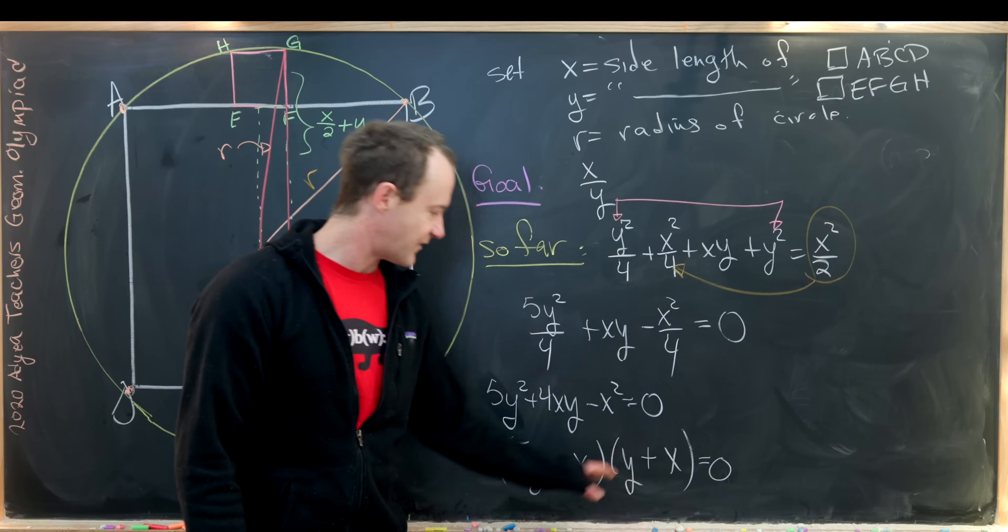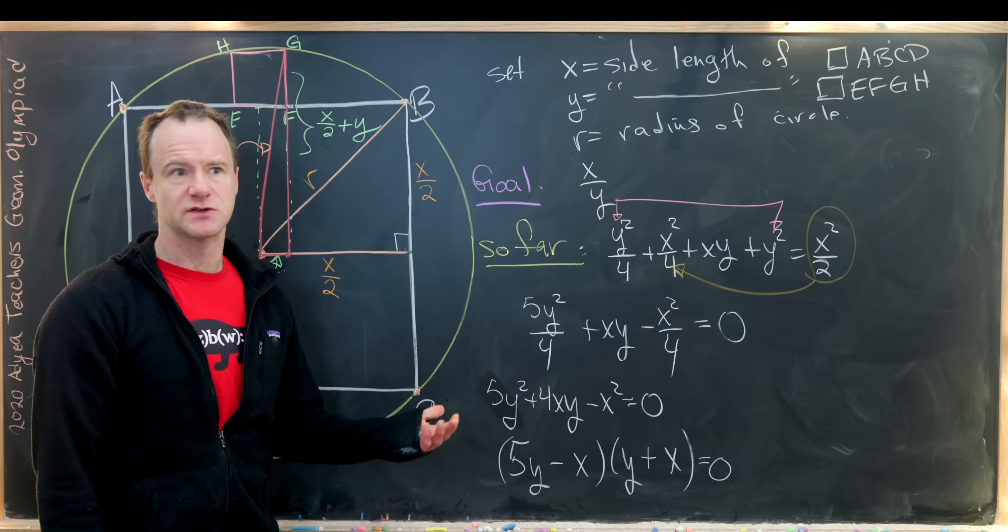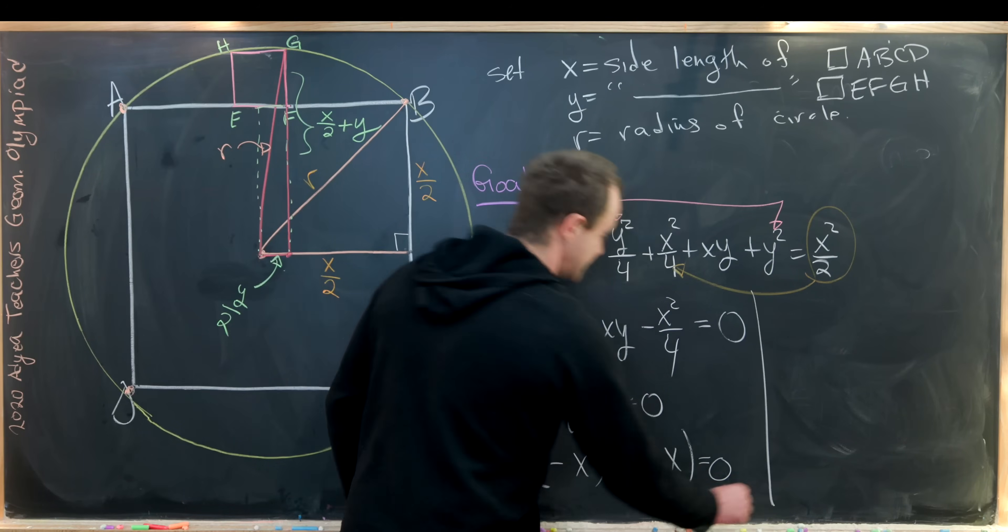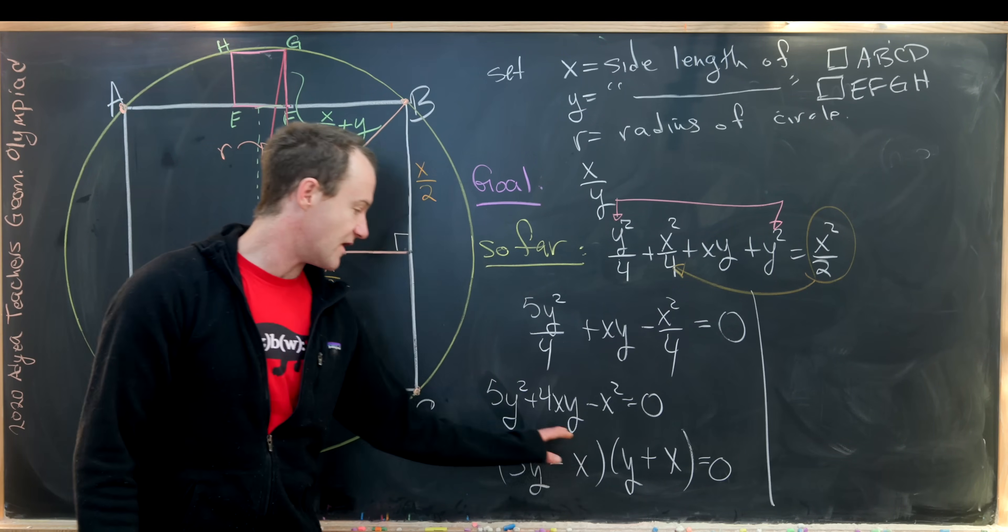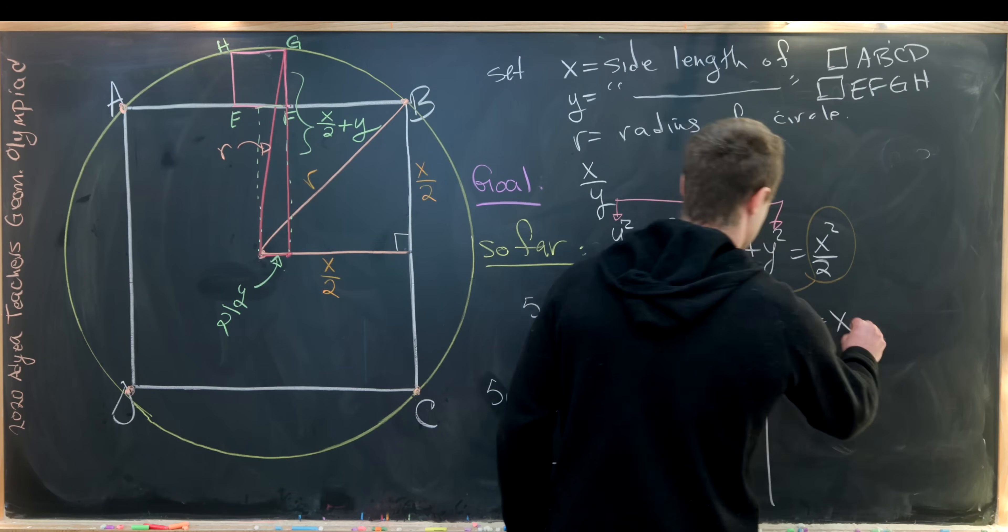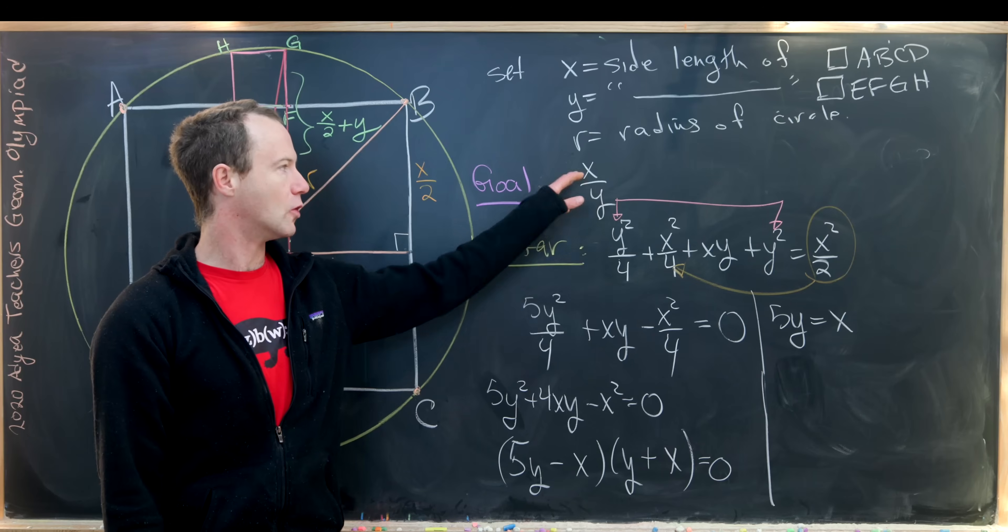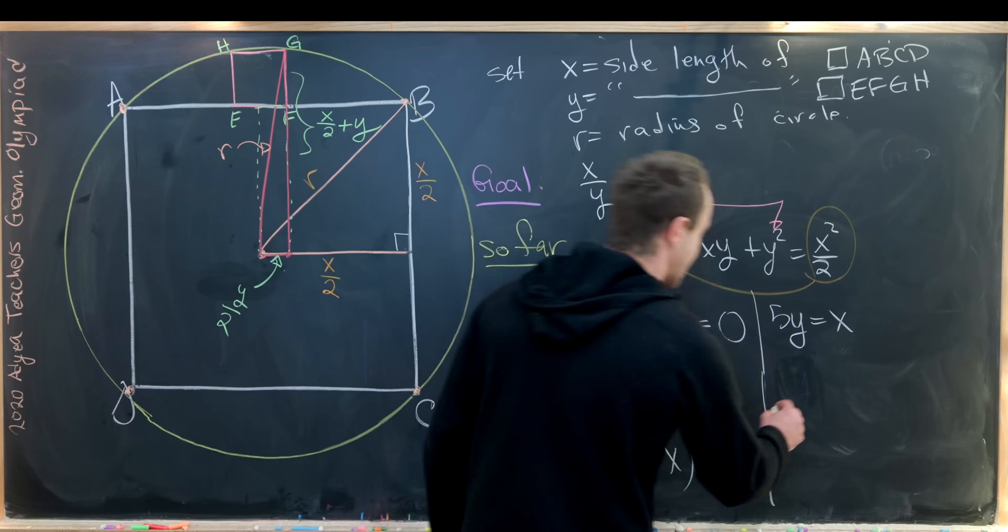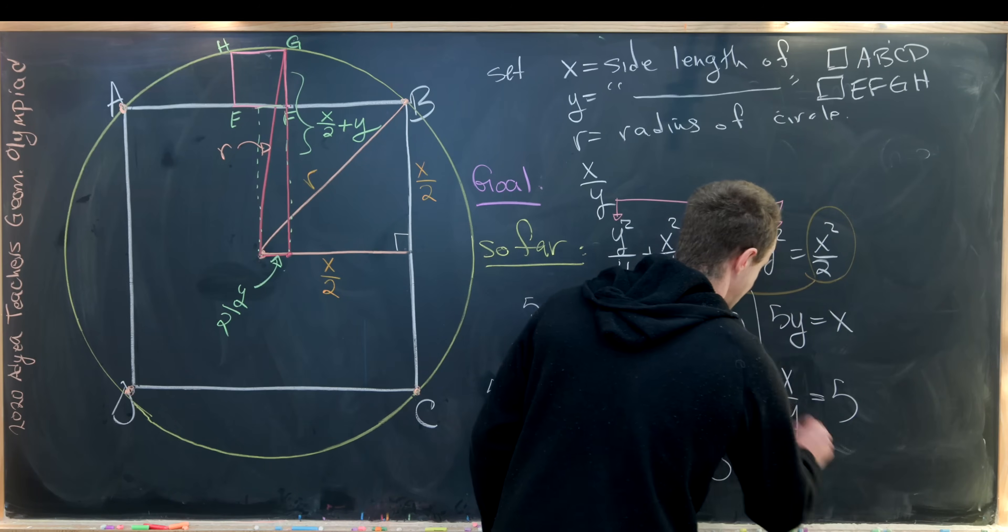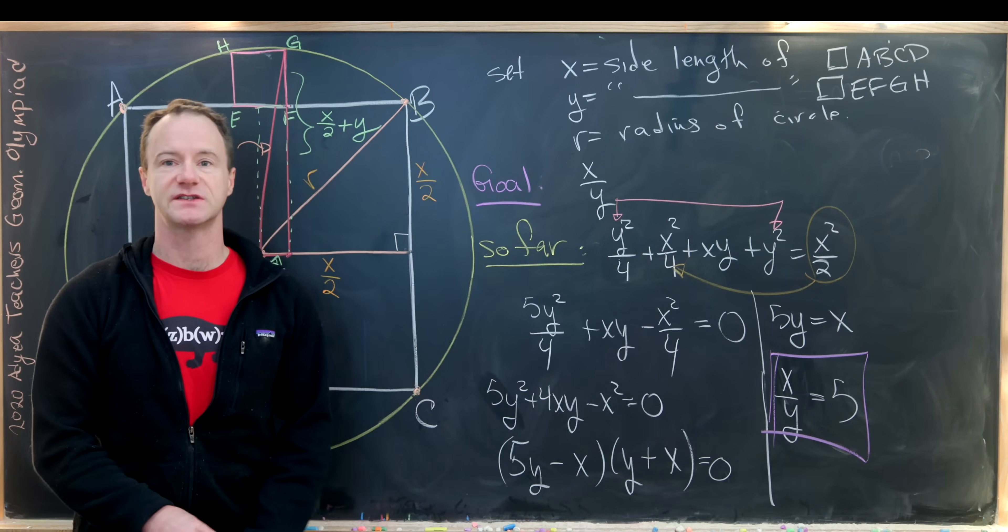So let's notice that this factor will give us the X and Y are opposites. So one is negative, but that doesn't make any sense in our situation. So we are only given a solution via this factor. So in other words, we know 5Y equals X, but that can be easily rearranged to find our goal, which is this ratio of side lengths. And we'll see that X over Y is equal to 5. And that was the final goal of this whole problem. And that's a good place to stop.